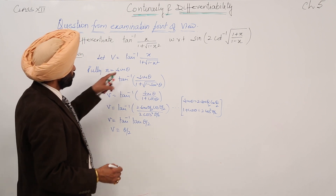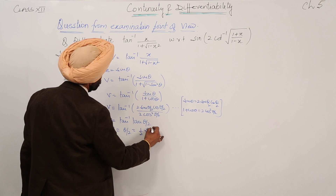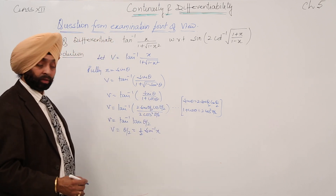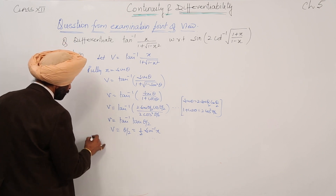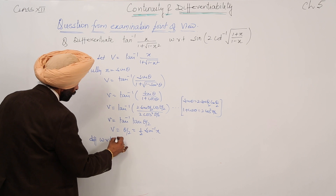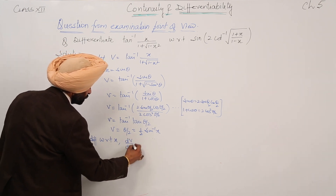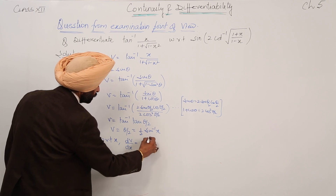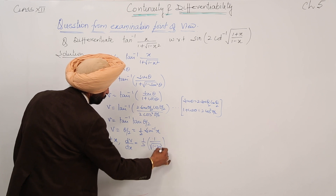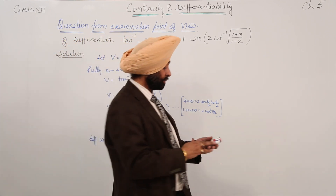So v equals θ/2. Differentiating with respect to x, what we get is dv/dx equal to (1/2) times 1 upon under the root of (1 minus x squared). So this was the first part.